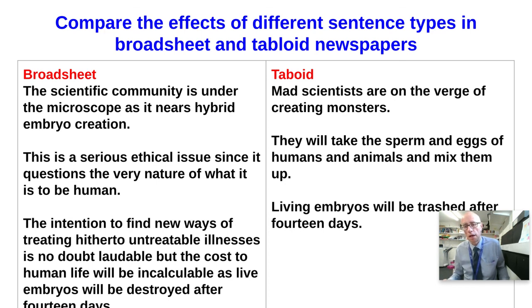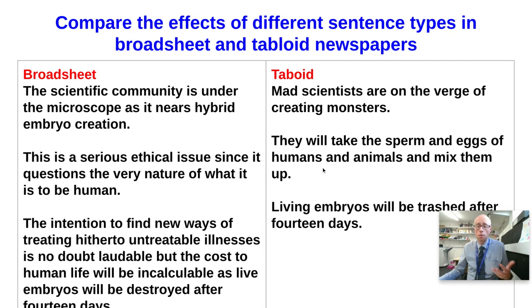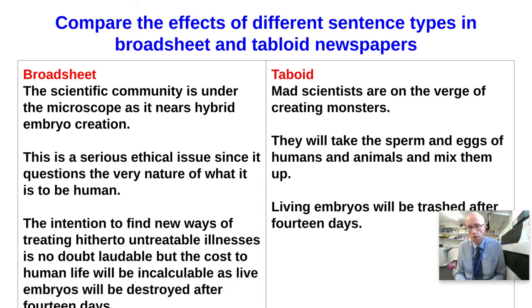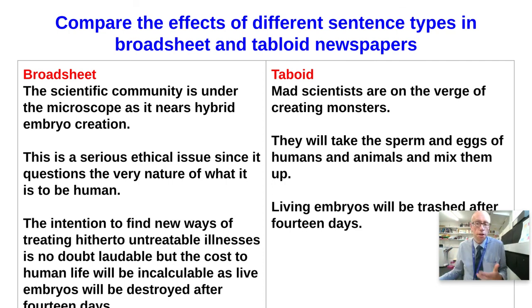Compare that with the tabloid, which says 'Mad scientists are on the verge of creating monsters' — a simple sentence. Sentence two: 'They will take the sperm and eggs of humans and animals and mix them up' — a compound sentence, two clauses joined by 'and'. Finally, 'Living embryos will be trashed after 14 days' — another simple sentence, albeit with a passive voice verb. This gives a more direct style. Tabloid newspapers have to take complicated information and ensure the register suits their implied reader, so simple sentences are a good way of breaking down complex information.